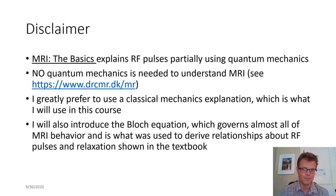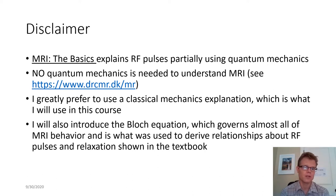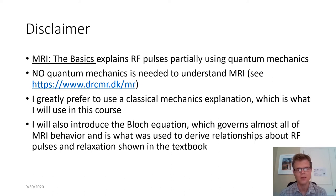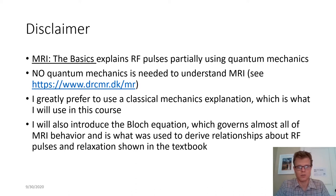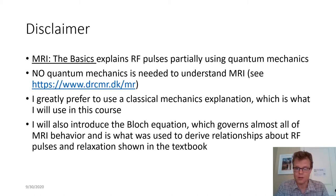I'm going to start off with this disclaimer. The textbook, MRI the Basics, explains RF pulses partially using quantum mechanics. However, you do not need quantum mechanics to understand MRI — or at least about 99% of it. There's a great discussion of that at the link shown here. I would greatly prefer to use the classical mechanics explanation, which I think is more clear and links up with the rest of the way we'll examine net magnetization and its effect on signal, flip angle, and such. So that's what I'm going to use in this lecture.